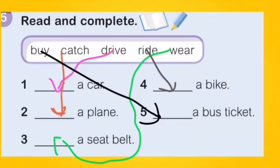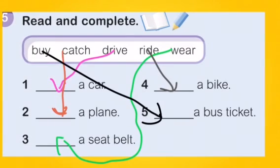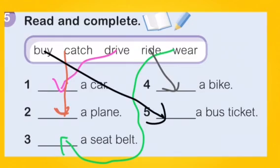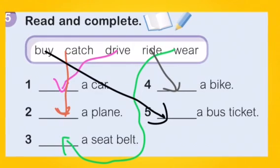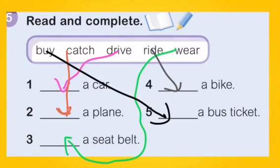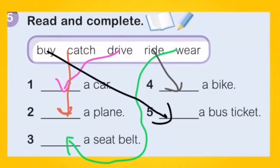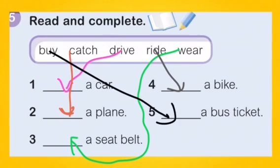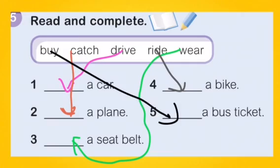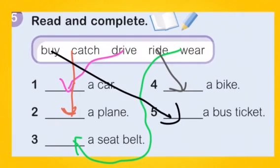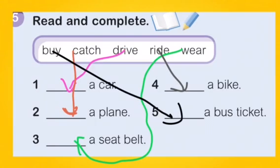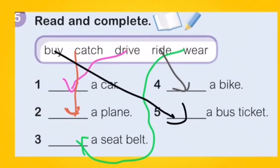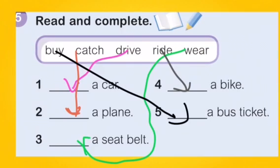Question number five — Read and complete. We have the words in the box and we're going to complete each phrase. Number 1: Drive a car. Number 2: Catch a plane. Number 3: Wear a seatbelt. Number 4: Ride a bike. Number 5: Ride a bike.